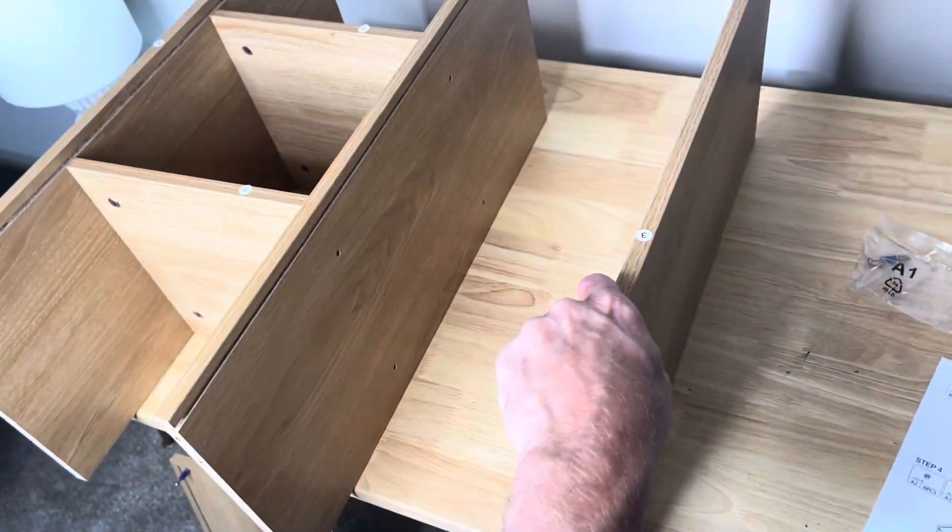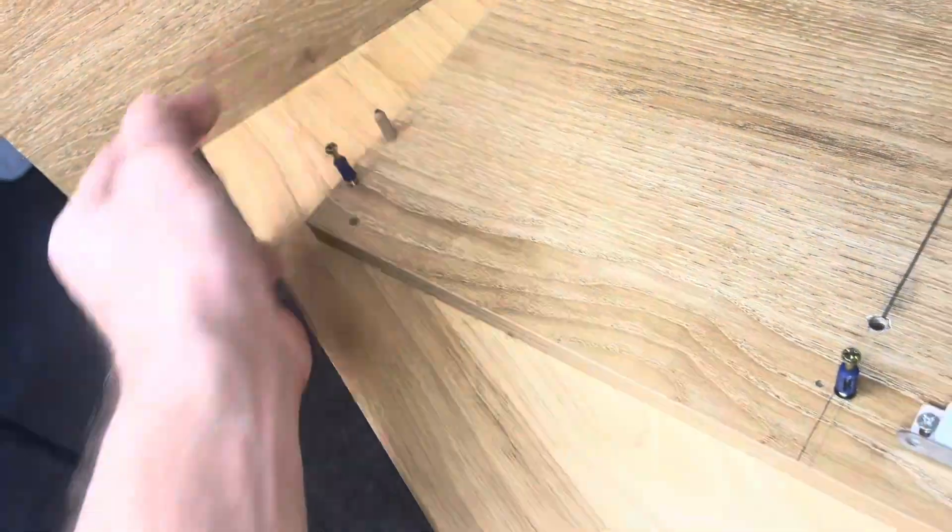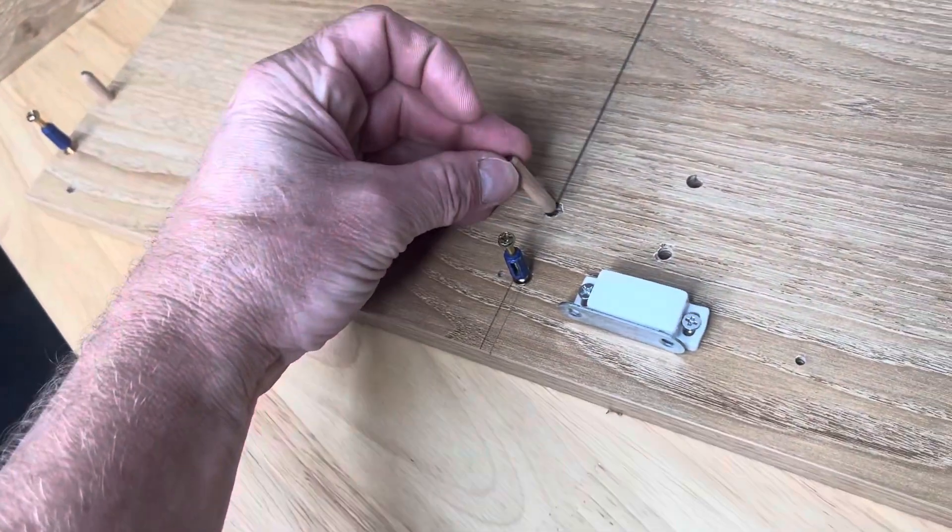Now the next piece, kind of get these pieces lined up here. Slap the wooden dowels in there. That's our top piece, which actually winds up being the bottom piece.